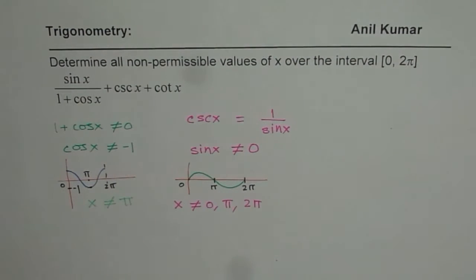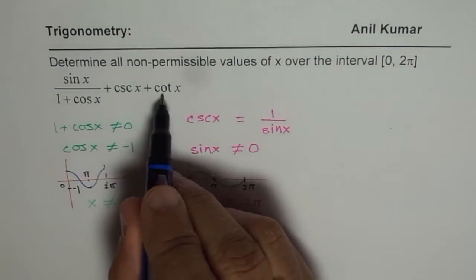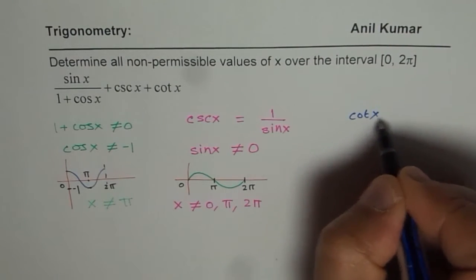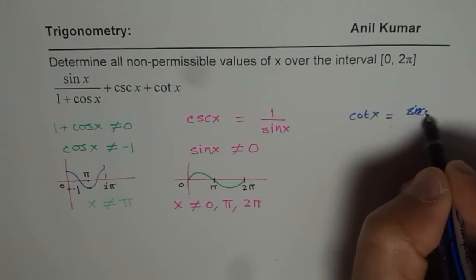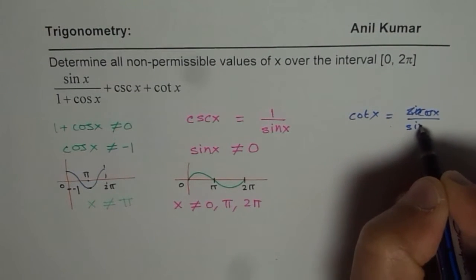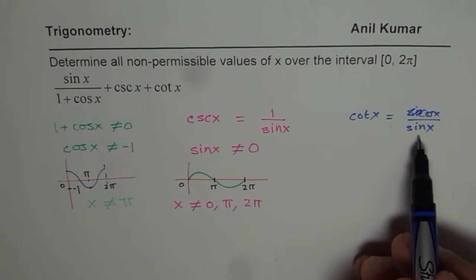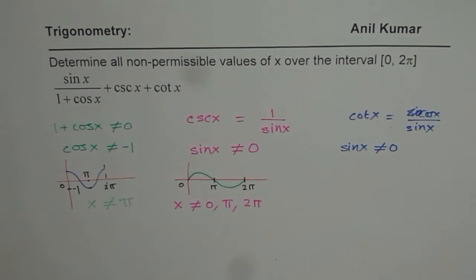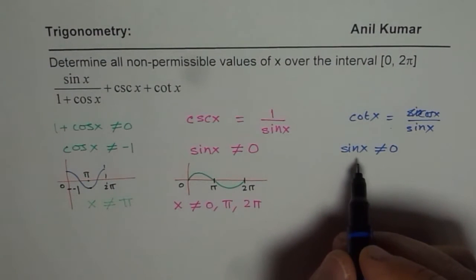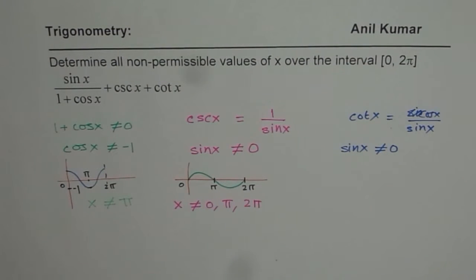So we get three restrictions for cosecant x. Now let us look into cotangent x. So cotangent x is equals to cosine x over sine x. That is cotangent x. So it has the same restrictions which are on sine x. So here also we have sine x not equal to 0, which we have already covered.